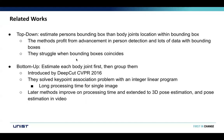In the related works, there have been many works on pose estimation. We can divide them into two categories. Top-down methods estimate a person's bounding box and then body parts are joined within that bounding box. This method profits from advancements in person detection algorithms and there is a lot of data with bounding boxes, but they struggle when bounding boxes coincide with each other. The other category is bottom-up methods, which estimate body joints first and then group them together. This method was introduced by DeepCut in CVPR 2016, which solves the keypoint association problem with an integer linear program.